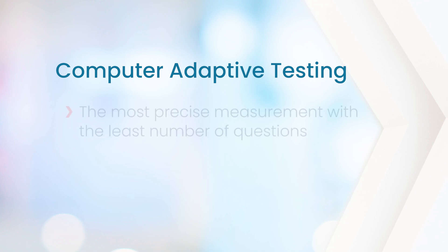That's why CAT is so important in the design of the NCLEX. Computer adaptive testing provides the most precise measurement with the least number of questions.